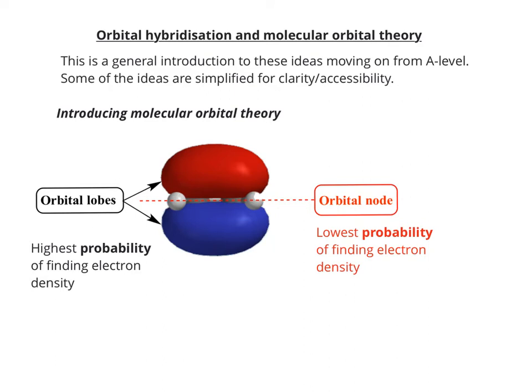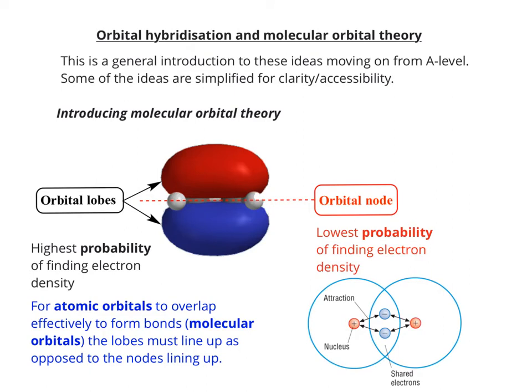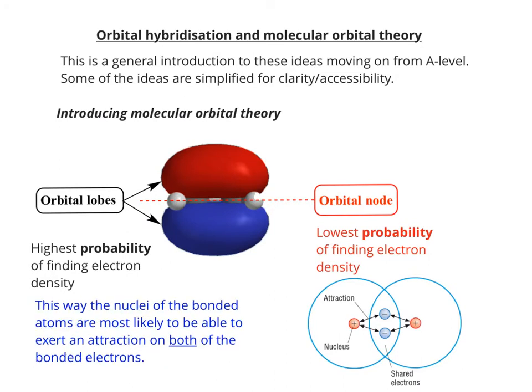To introduce molecular orbital theory, we need to come back to the idea of lobes and nodes. A lobe is the highest area in an orbital where you get the highest probability of finding electron density, as opposed to a node, where you get the lowest probability. In order for atomic orbitals to overlap effectively to form molecular orbitals, the lobes must line up rather than the nodes, so you get a good overlap. In this way, the nuclei of the bonded atoms are more able to exert the attraction they need to form an effective bond, and this attraction has to be for both of the bonded electrons, as the diagram shows.